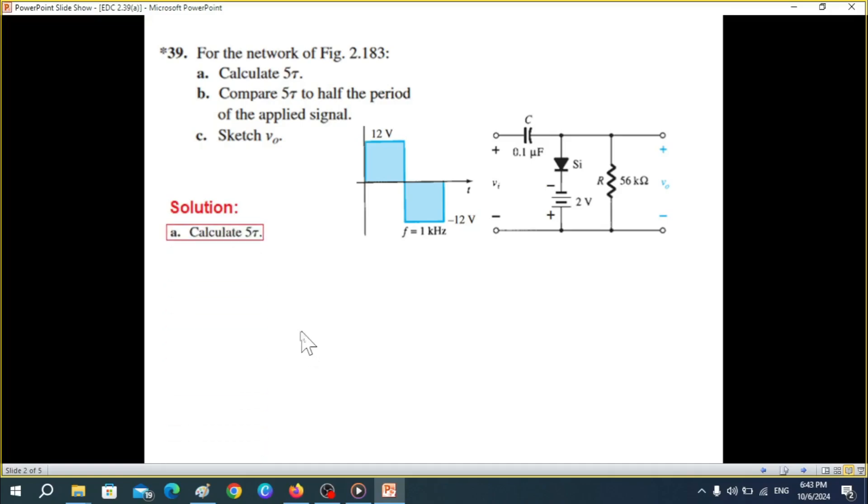So first of all, we'll calculate 5τ. And if you recall, the time constant τ for RC circuit is given by R multiplied by C. Now the question is, which R we take? Let's first of all consider the positive half input. And because when the positive half is here, this diode will become forward bias, so we'll replace it with a 0.7 volt battery.